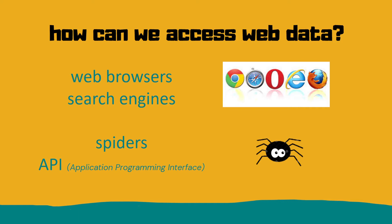So how can we access web data? We personally use web browsers and search engines that use key terms to find the data we want. Search engines use spiders to find web pages relevant to what we're looking for, and we can actually write these in computer programs. Another way to access web data is using an API — an Application Program Interface — where a computer can go to a web page database and collect a lot of data.